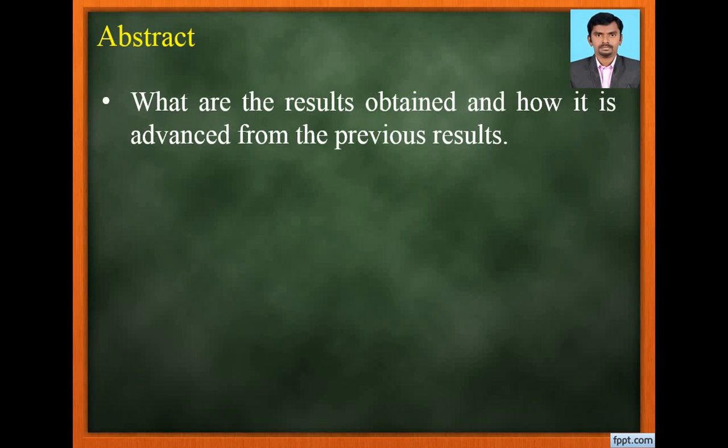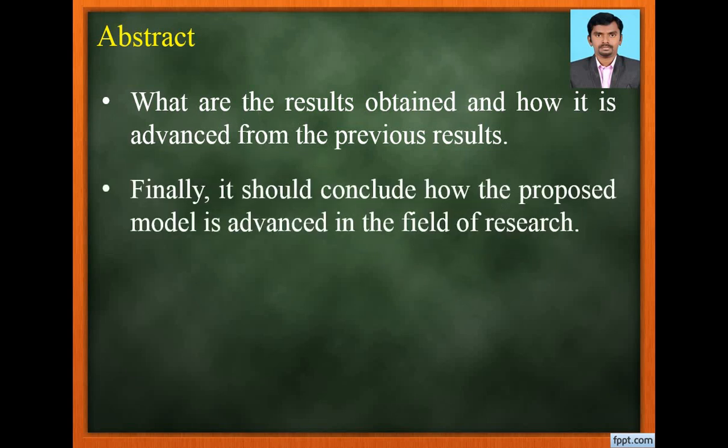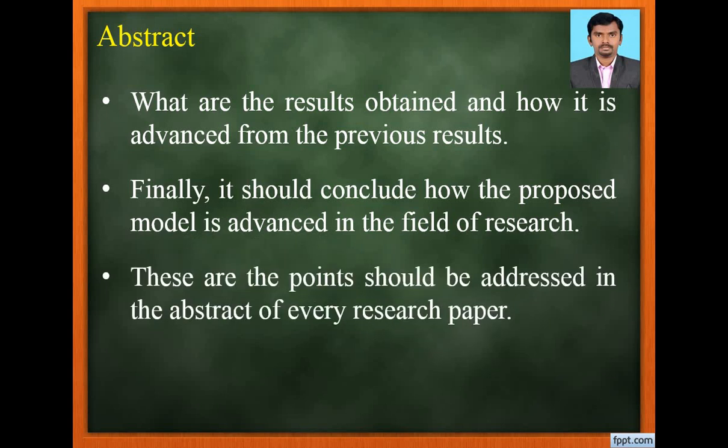What are the results obtained and how it is advanced from the previous results — that means compared to previous models — should be mentioned in the abstract. And finally, the abstract should conclude how the proposed model is advanced in the field of research. These are the points that should be addressed in the abstract of every research paper.